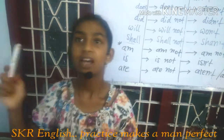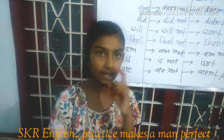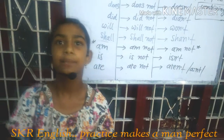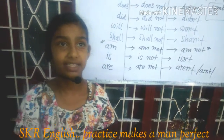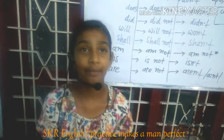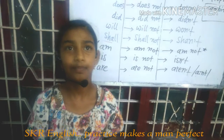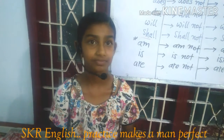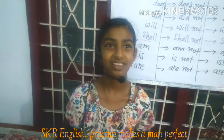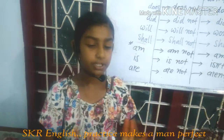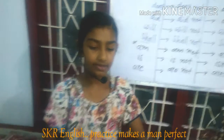Helping verbs and main verbs. In helping verbs there are: do, does, did, will, shall, am, is, are, was, were, have, has, had. And main verbs: V1, V2, V3, V4, V5 — we generally call them that.